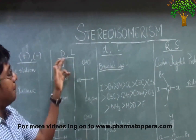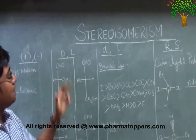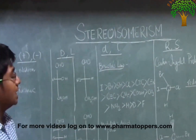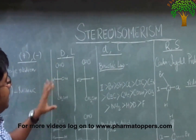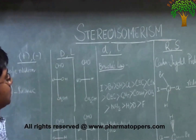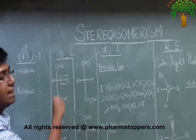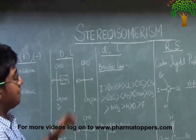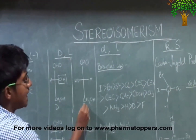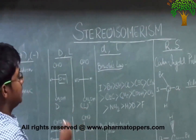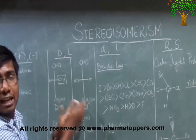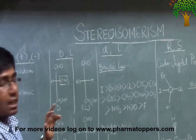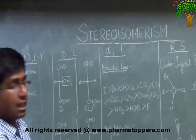Now, what is capital D and small d? Capital D and L notation is totally based on glyceraldehyde nomenclature. In glyceraldehyde, the OH that you see is on the right — when it is on the right, it is the D conformer. When the OH is on the left, it is the L conformer. So this is D-glyceraldehyde and this is L-glyceraldehyde.